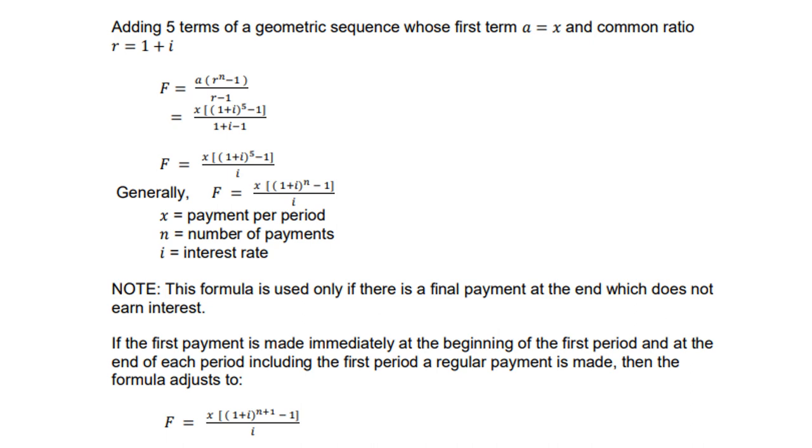If the first payment is made immediately at the beginning of the first period, and at the end of each period, including the first period, a regular payment is made, then the formula must be adjusted to x[(1 + i)^(n+1) - 1]/i, that is the difference now.